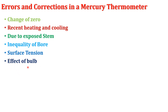The next error is the effect of the bulb. The bulb is a glass material and a bad conductor of heat, so it has an insulating effect. Due to this, mercury inside the bulb may not attain the temperature of the bath. To correct this error, the bulb should be thin-walled and the thermometer should be kept in the bath for a long time before measuring temperature to obtain an accurate reading.